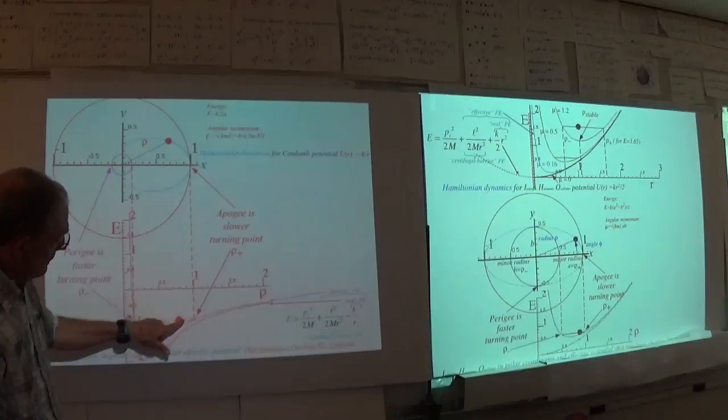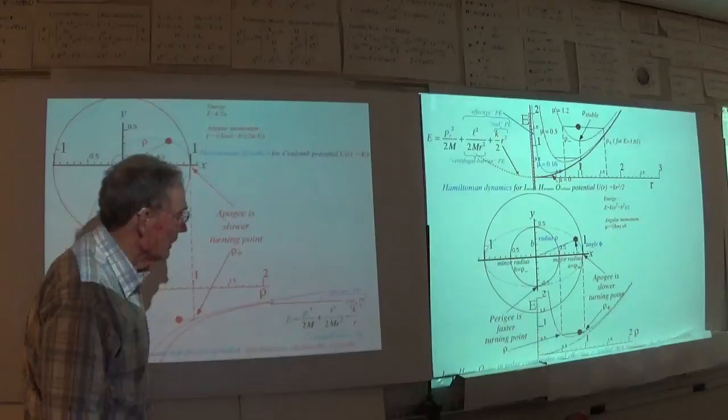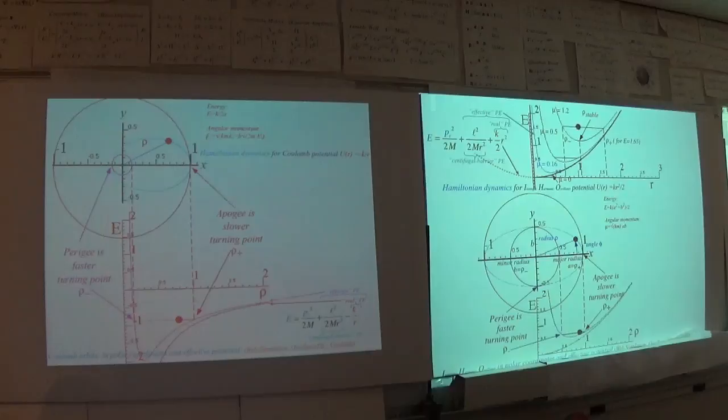This stuff here in pink is the effective potential that this Coulomb problem has. Let's go ahead and animate a couple of things.